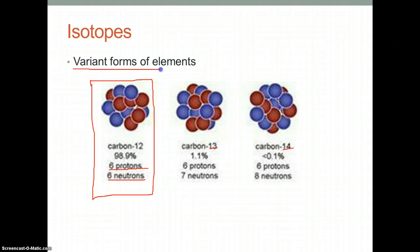These are the variant forms of the element. What this means is that the element remains the same by having the same number of protons. As we can see, carbon-13 and 14 both have the same number of protons as carbon-12. However, the mass of the carbon changes by having various numbers of neutrons. Carbon-14 has eight neutrons and carbon-13 has seven neutrons.